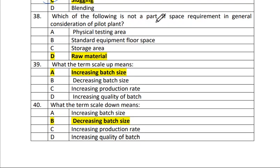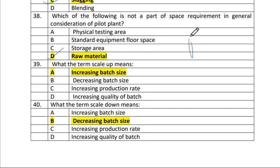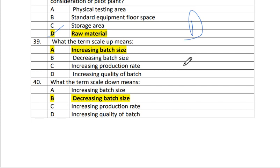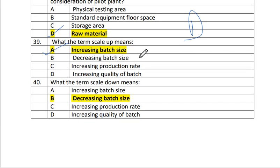Question 38: Which of the following is not a part of space requirements in the general consideration of a field plant? The answer is D — raw material. Question 39: What does the term 'scale up' mean? The answer is A — increasing batch size. Question 40: What does the term 'scale down' mean? The answer is decreasing batch size.